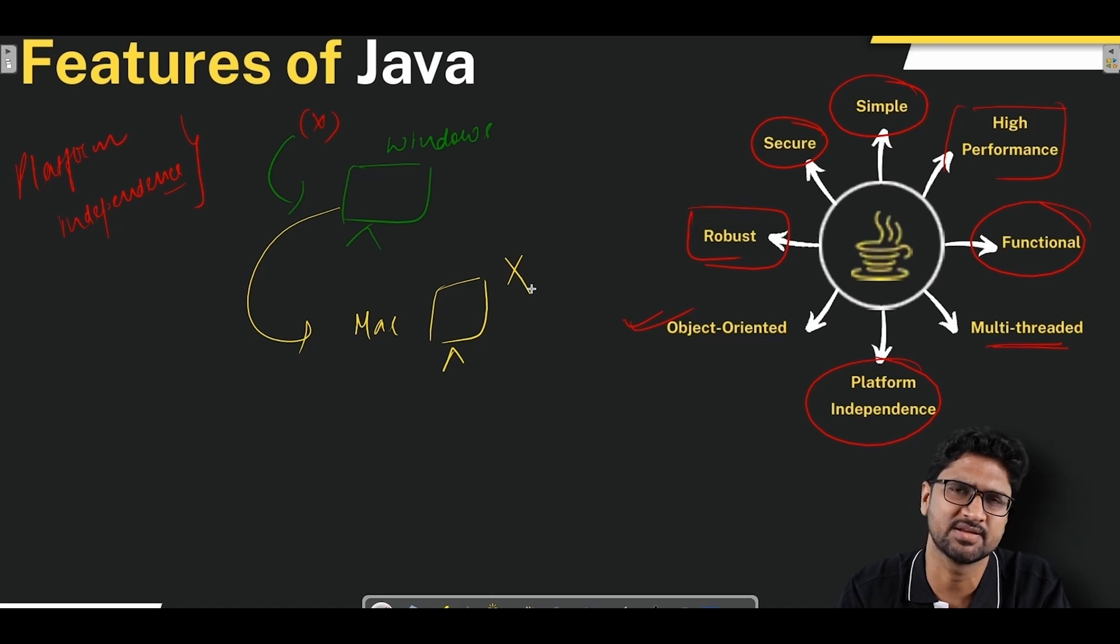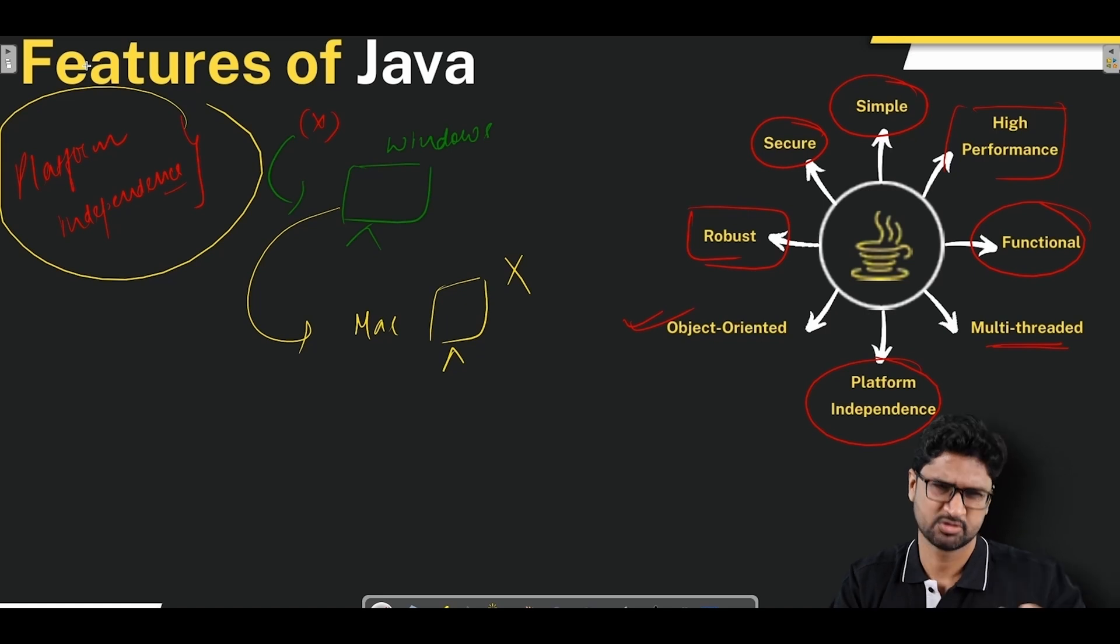Java brings a great feature: you write the code on one platform, you have Linux, great, you write the code there, but now when you want to execute, be it Mac, be it Windows, it will work seamlessly equally well. That's one of the most unique features of Java. Most modern programming languages are platform independent, but when Java came up, that was one of the unique concepts Java brought to the table.